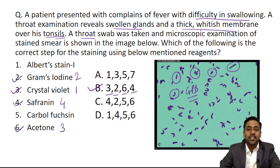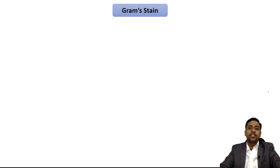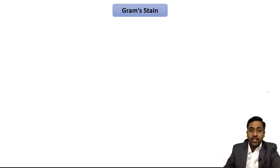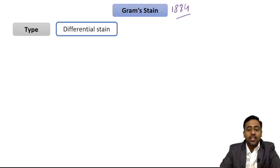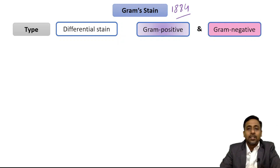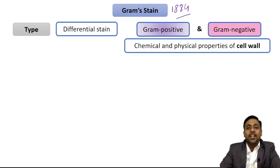Gram stain was originally discovered by Hans Christian Gram in 1884. Gram stain is a differential stain — it differentiates organisms into gram-positive and gram-negative on the basis of color. The principle behind this differentiation is the difference in the physical and chemical properties of the cell wall.